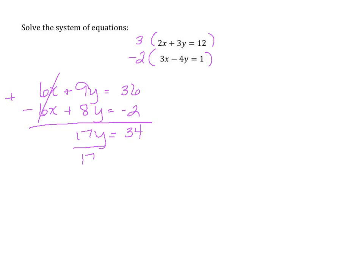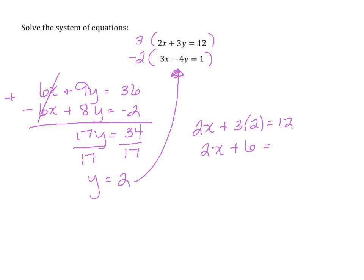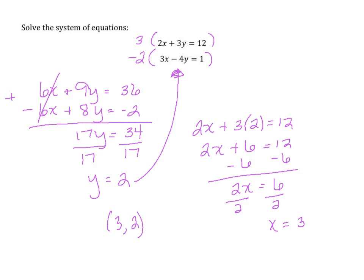To get y by itself, we divide by 17, so y equals 2. Now we need to find x, so we plug into the top equation, replacing y with 2: 2x plus 6 equals 12. Subtracting 6 gives 2x equals 6, and dividing by 2 gives x equals 3. So the ordered pair (3, 2) is the location where this system crosses.